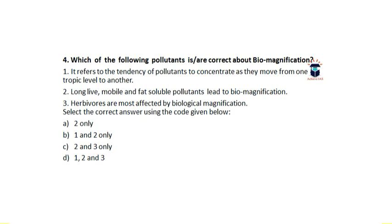The next question is: which of the following statements are correct about biomagnification? First, it refers to the tendency of pollutants to concentrate as they move from one trophic level to another. Second, long-lived, mobile, and fat-soluble pollutants lead to biomagnification. Third, herbivores are most affected by biological magnification. We have to choose the correct answer.